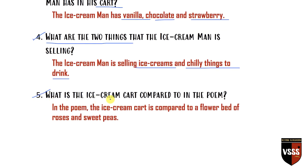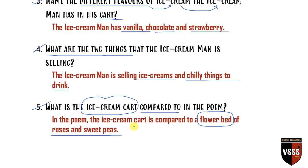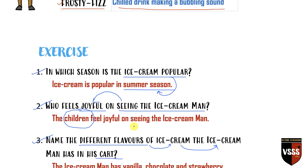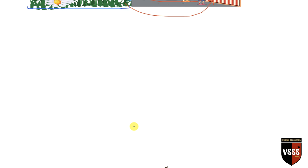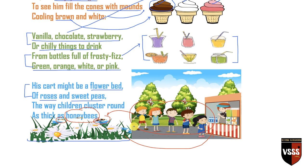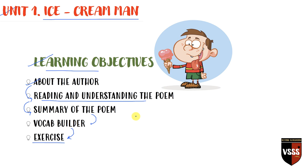The last question: What is the ice cream cart compared to in the poem? In the poem, the ice cream cart is compared to a flower bed — a bed of roses and sweet peas. And if the question asks what the children are compared to, the children are compared to honey bees. So these were the five questions. Watch the video again and again if you don't understand anything. Stay smiling — the summer season is on, you can go out and have some ice cream, but stay cautious and keep your health in check. Take care, have a nice day, thank you for watching, and God bless you.